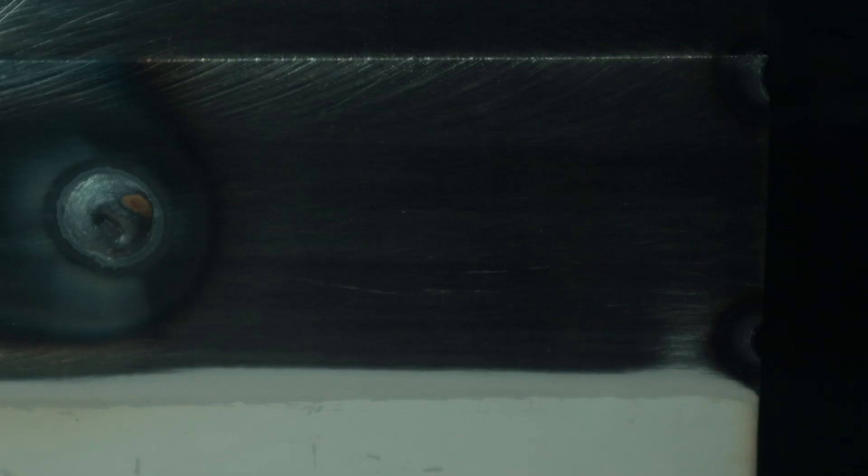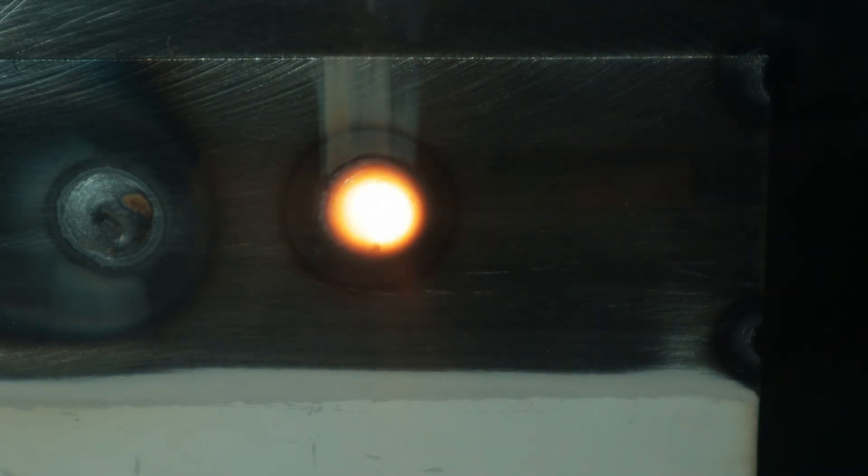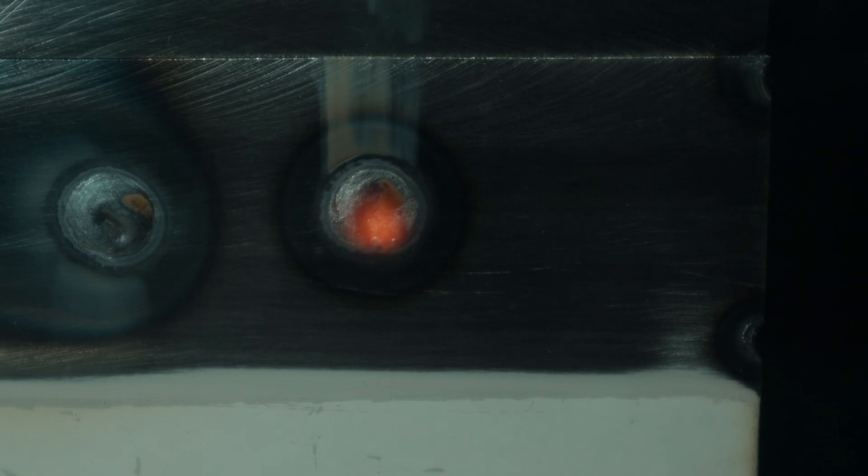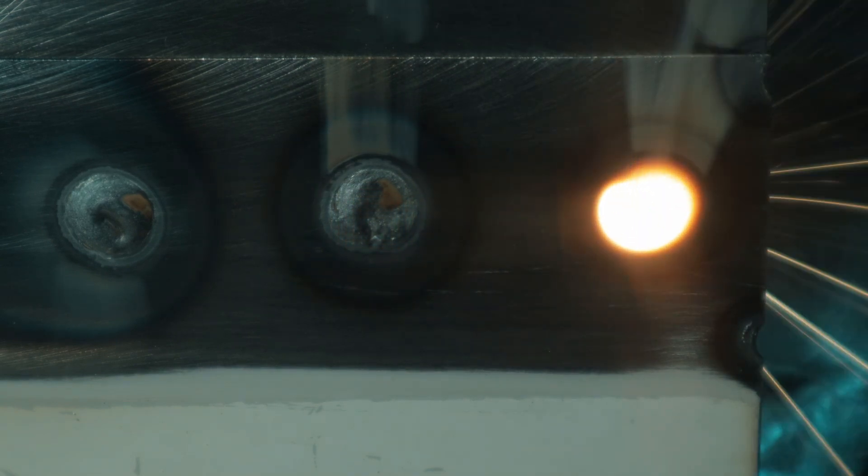This machine has a spot weld timer and I had that set to 3.2 seconds. For the vertical position I should have adjusted the timer slightly longer because you can see it didn't quite finish the weld. But it's a feature I'll definitely use.